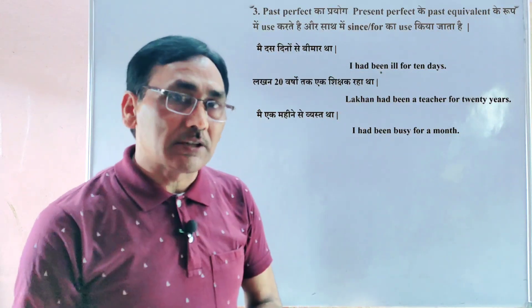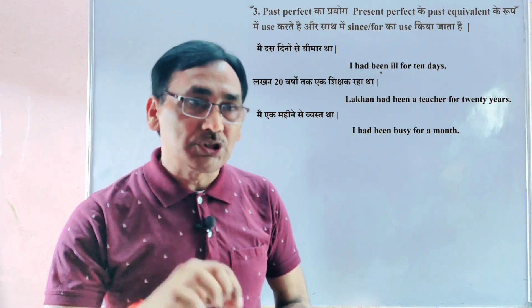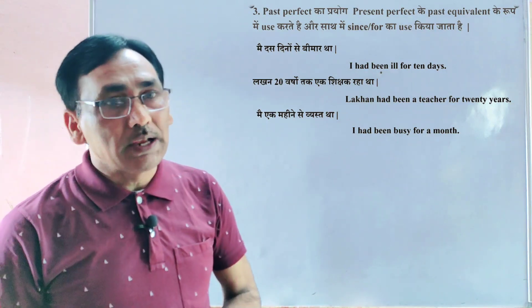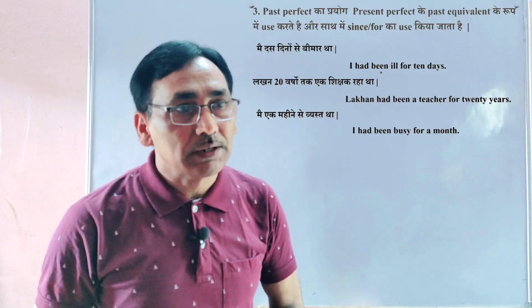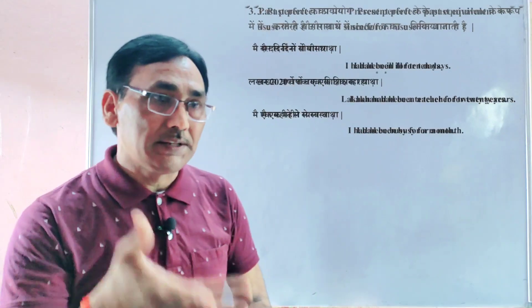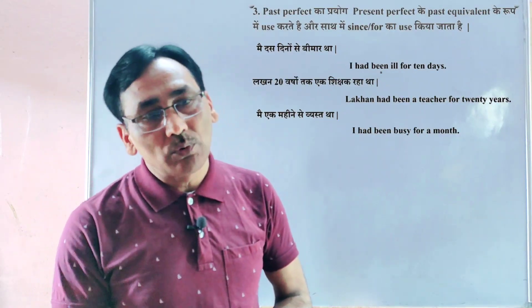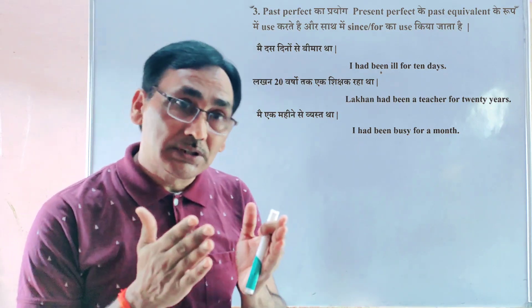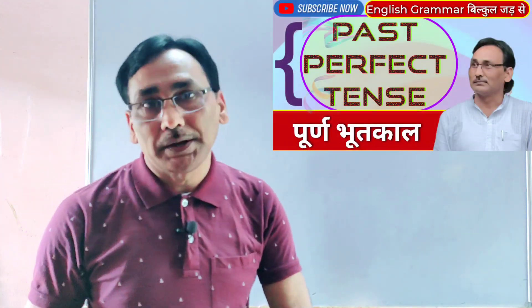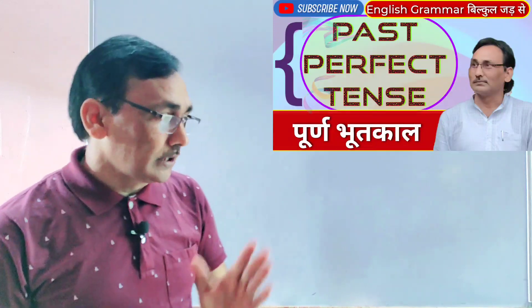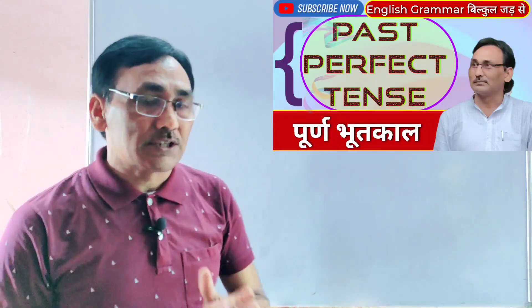Past Perfect Tense का उपयोग समय सूचक भाव में भी होता है, जिसमें since और for का प्रयोग किया जाता है। जैसे — I had been ill for 10 days — मैं 10 दिनों से बीमार रह चुका था। I had been busy for a month — मैं एक महीने से busy था। इस प्रकार से हम Past Perfect Tense बनाते हैं और उम्मीद है यह आपको बेहतर रूप से समझ में आ गया होगा।